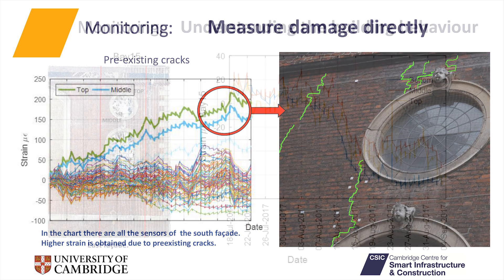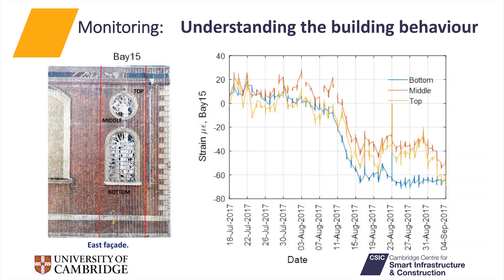The strain also helps us understand the building behavior. These charts show the strain at three different levels of the fibre optic in bay 15 at the northeast corner of the church. Although the facade is in sagging, compressive strain is recorded. Furthermore, the bottom-level strain is higher than the others, helping us explain the bending deformation of the facade.